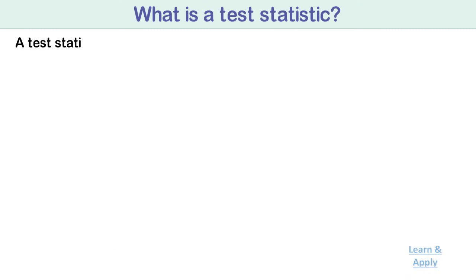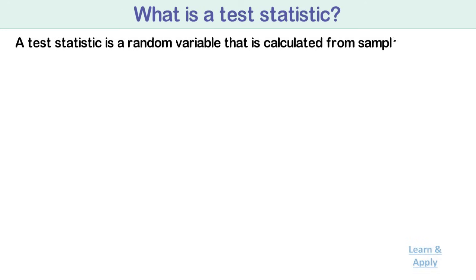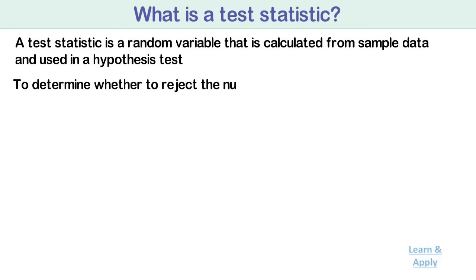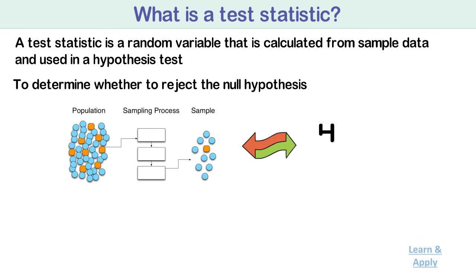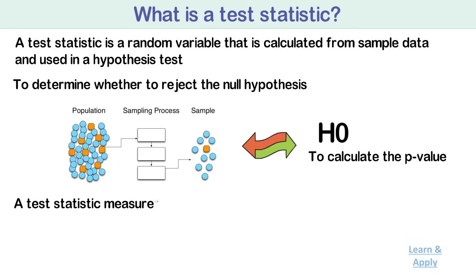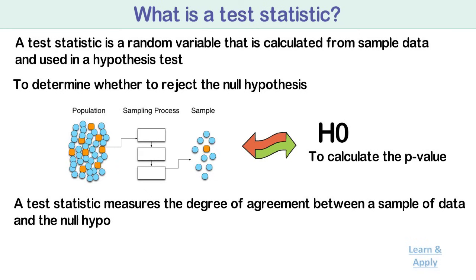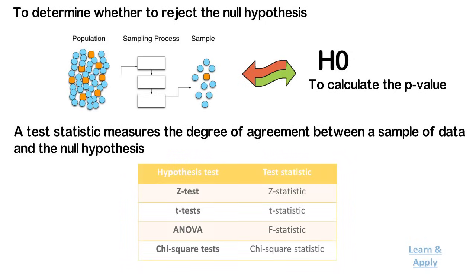What is a test statistic? A test statistic is a random variable calculated from sample data and used in a hypothesis test. You can use test statistics to determine whether to reject the null hypothesis. The test statistic compares your data with what is expected under the null hypothesis and is used to calculate the p-value. It measures the degree of agreement between a sample of data and the null hypothesis. Different hypothesis tests use different test statistics based on the probability model assumed in the null hypothesis — for example, the z-test uses the z statistic.